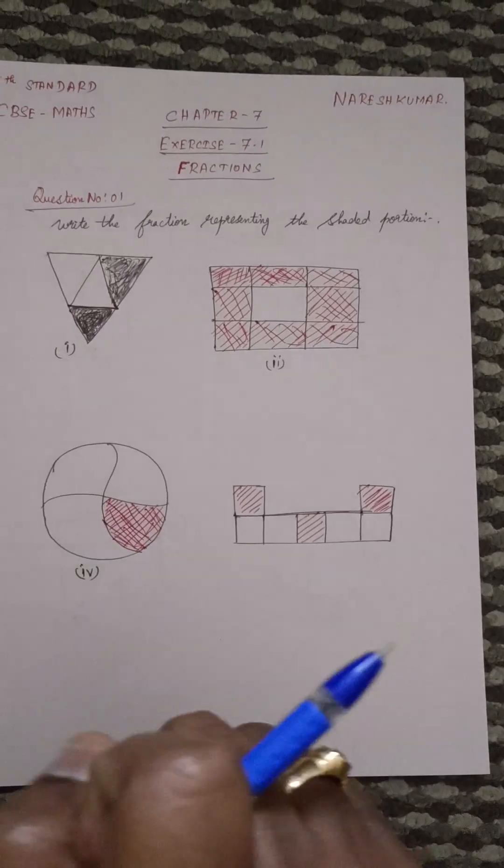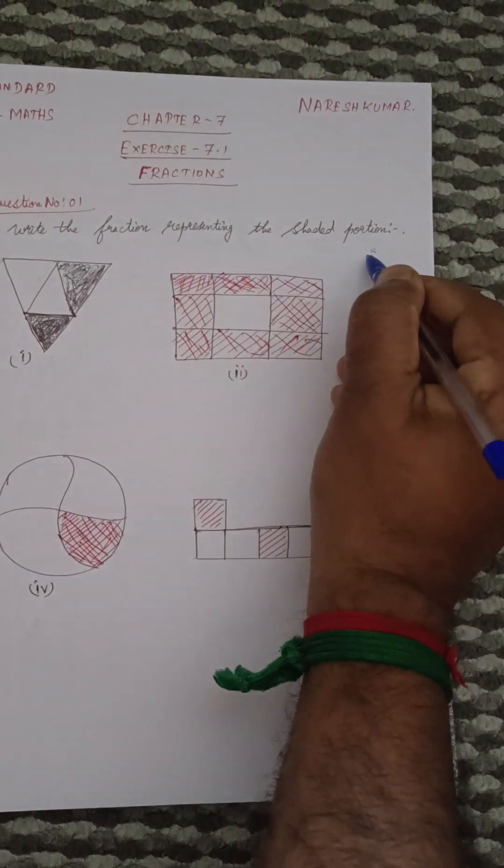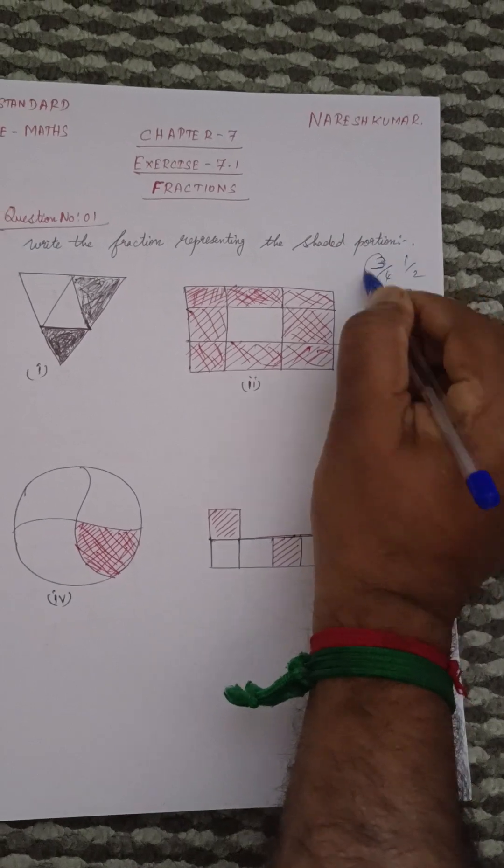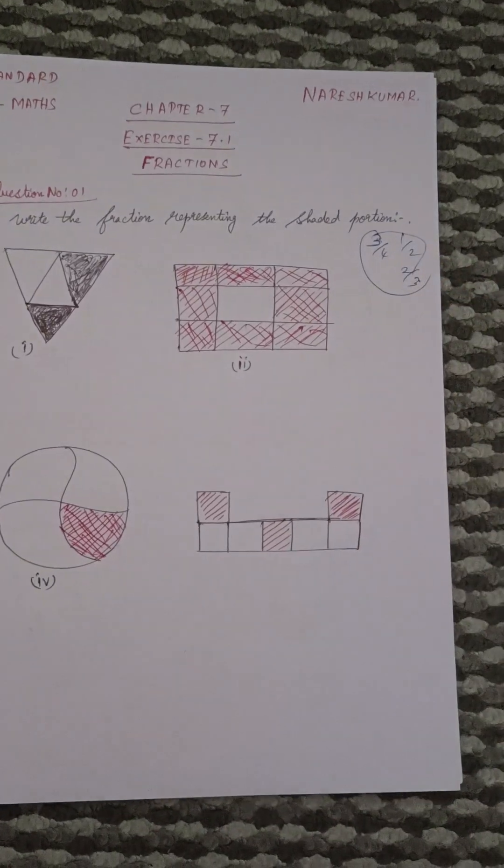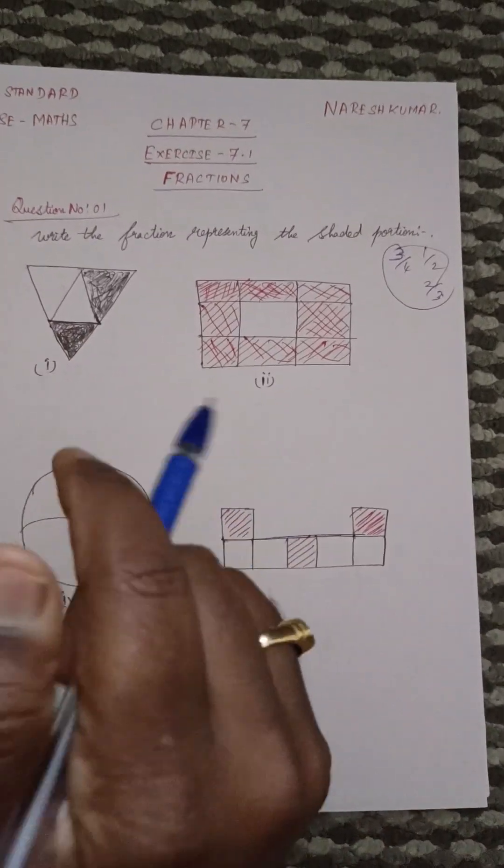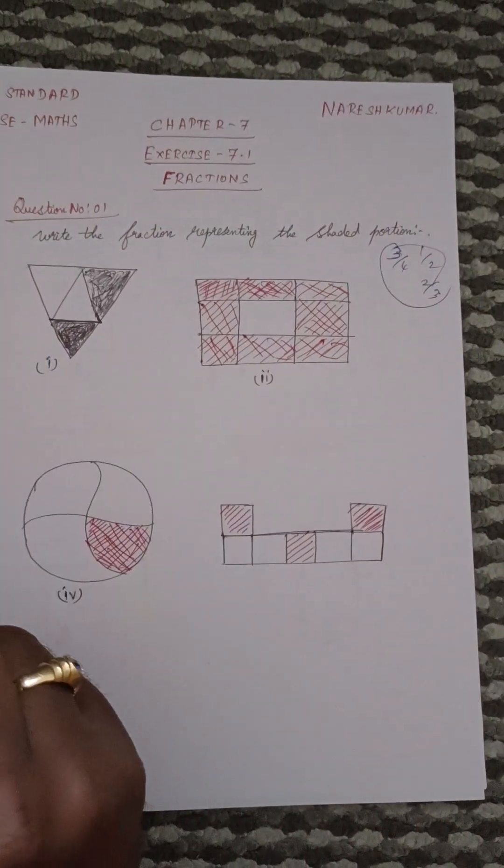Fraction means how we write in number perspective. Fraction means 3 by 4, 1 by 2, 2 by 3, like this method. So in this case, how are we going to write the fraction by using this diagram?